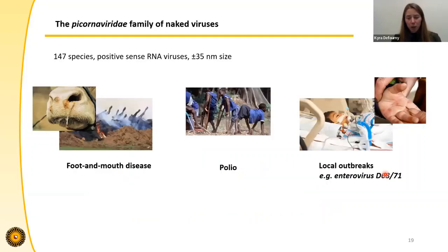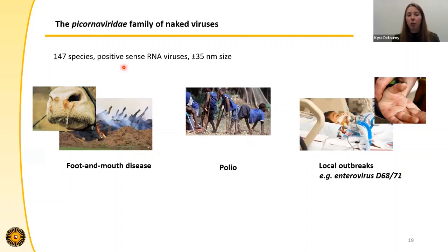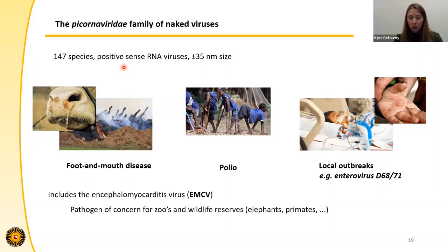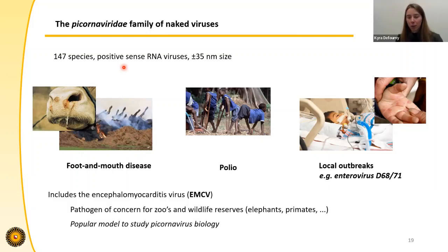Picornaviruses form a very large family of viruses. You may have heard about them — they've caused big outbreaks in the past, such as outbreaks of hoof-and-mouth disease and polio, and they still appear in the news for causing local outbreaks among children. In total, there are 147 different species of picornaviruses, all of which are positive-sense RNA viruses of about 35 nanometers in size. Among all these species, we're particularly interested in the Encephalomyocarditis virus, or EMCV. EMCV is a veterinary pathogen primarily of concern for zoos and wildlife reserves because it can cause fatalities among elephants, primates, and many other mammals. But the primary reason we're interested in it is that it's a very popular model to study picornavirus biology, meaning we know a lot about its virus-host interactions — which is necessary to pinpoint which interactions are important for vesicle release.